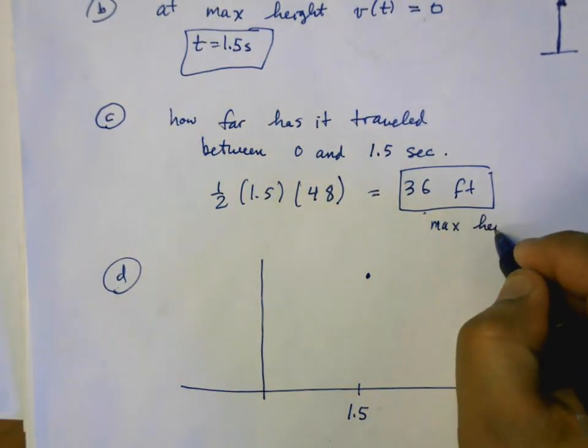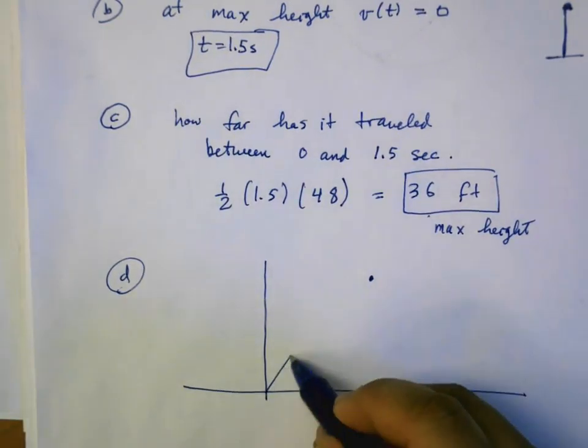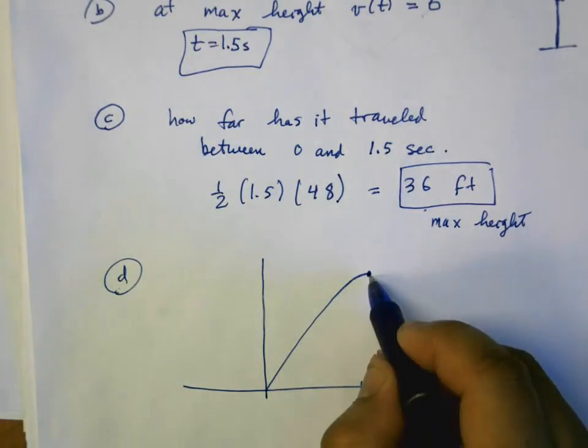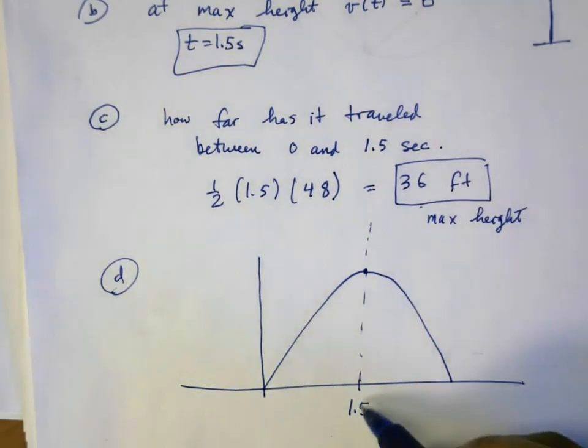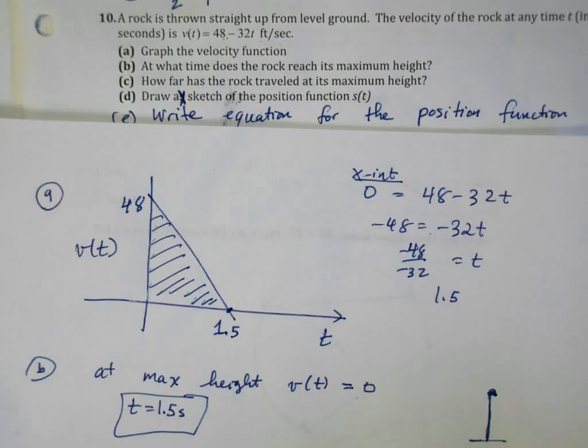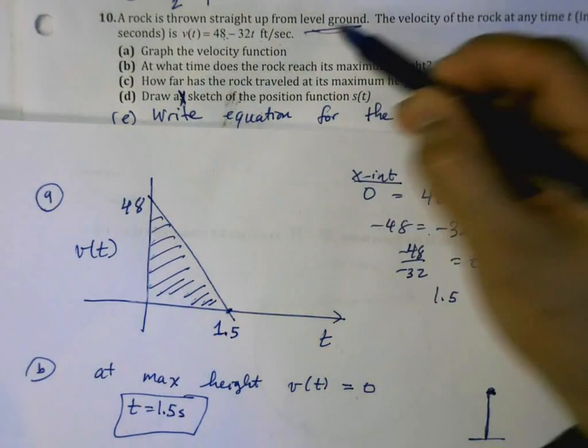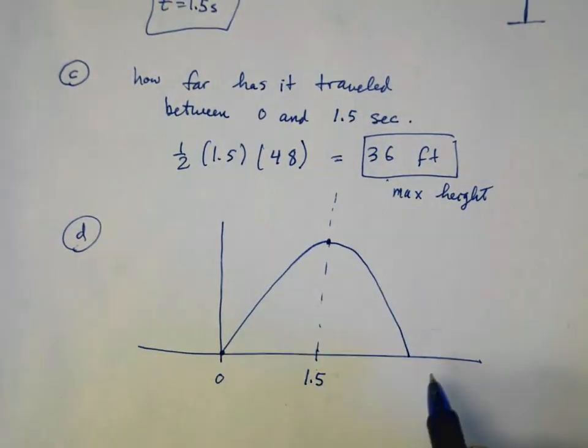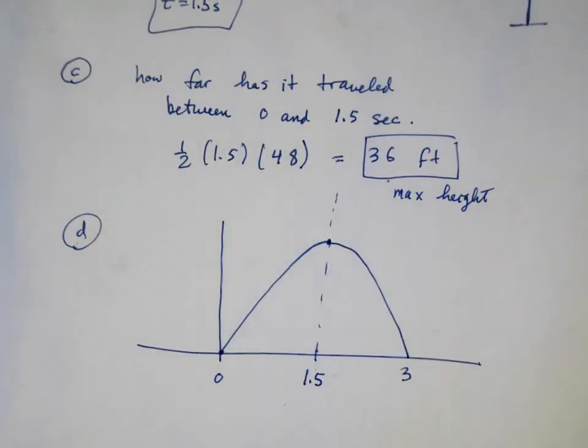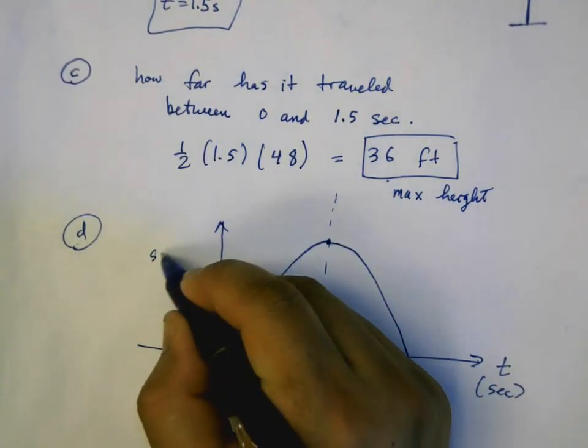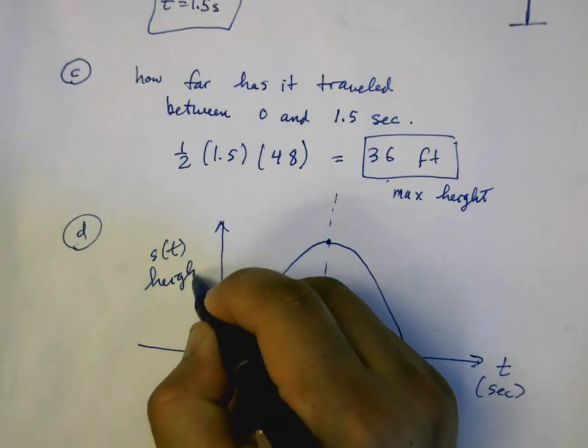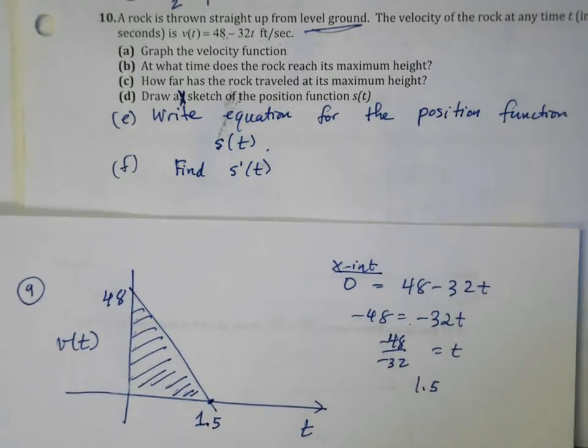Part A: graph the velocity function. I think I can graph a pretty good one, this is linear. It has a y-intercept of 48 and it has an x-intercept of 1.5. To see how I did that, well the x-intercept set v equal to 0 and solve for t, so negative 48 equals negative 32t. 48 over negative 32 equals t, so this is 1.5. The y-intercept is plug 0 in here for t and you got it. So this is the t-axis and this is the velocity v(t).